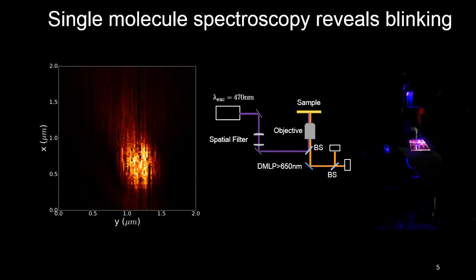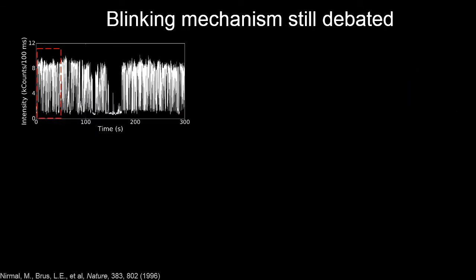What we do once we find a single quantum dot is monitor its fluorescence intensity as a function of time. Here I'm showing you an example where on the y-axis we have the fluorescence intensity of a single cadmium selenide quantum dot under continuous wave excitation. The signal rapidly and randomly switches between these two high and low states.